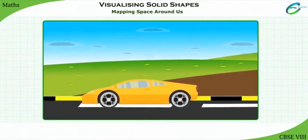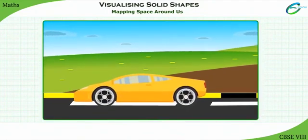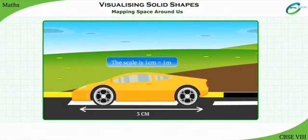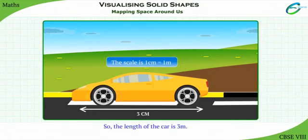This is the picture of a car. In the picture, the car is 3 cm long. 1 cm in the picture is the same as 1 meter of the real car. This is the scale of the drawing. The scale is 1 cm equal to 1 meter. So, the length of the car in reality is 3 meters, but on the map, it is scaled and represented as 3 cm.